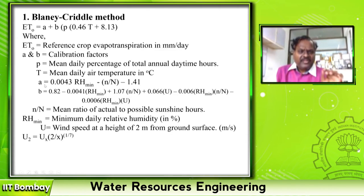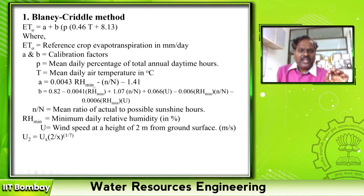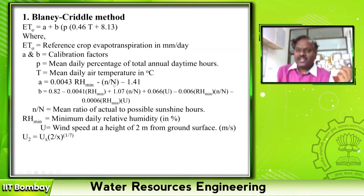For example, some books might have given 0.43 relative humidity minimum, then RH minimum will be in ratio. If I have given 0.0043, then you have to use this RH minimum in percentage. N by N is also in hours — this is dimensionless.